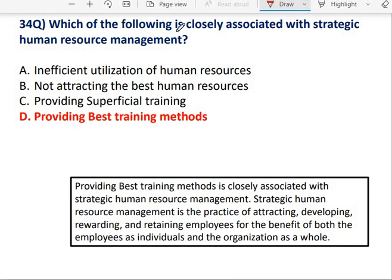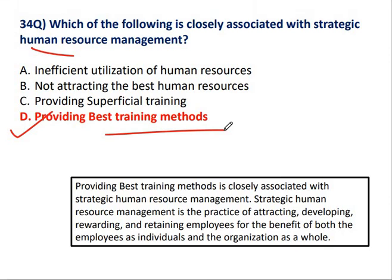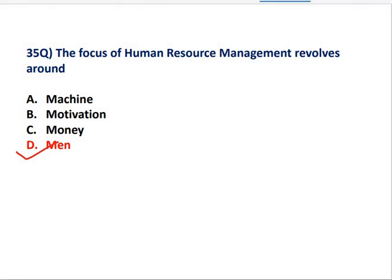Question No. 34: Which of the following is closely associated with Strategic Human Resource Management? Providing the best training methods — strategically implementing them — correct option is D. And this is the last question for Unit 1: The focus of Human Resource Management revolves around people — correct answer is people.